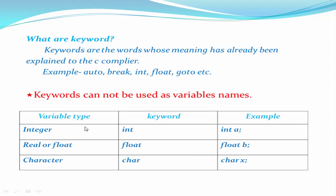For integer constants, we use the keyword 'int' — for example, 'int a', where a is a variable and int is a keyword. For real or float constants, we use the keyword 'float' — for example, 'float b'. For character constants, we use the keyword 'char' — for example, 'char x'. That covers the basic concepts of keywords, constants, and variables.